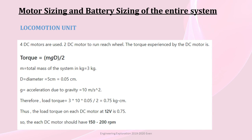My name is Sujai, I am going to be talking about motor sizing and battery sizing of the entire system. First we will take up locomotion unit. We have used 4 DC motors for the movement of our model. The torque which is experienced by the DC motor is given by torque equals mgD divided by 2. Here m equals total mass of the system which is 3 kg. D is diameter 5 cm that is equal to 0.05 m. g is acceleration due to gravity, 9.8. We have rounded it off to 10 m per second square. Therefore, load torque equals 3 multiplied by 10 multiplied by 0.05 divided by 2 which gives us 0.75 kg cm. Thus, the load torque on each DC motor at 12 volt is 0.75 kg cm. So each DC motor should have 150 to 200 rpm.